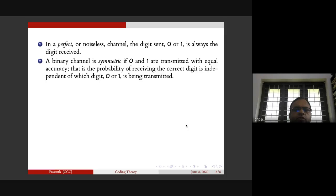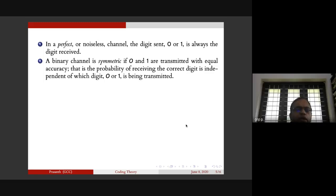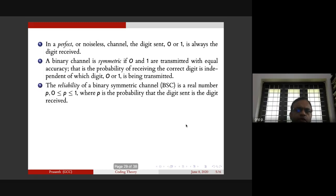A binary channel is symmetric if zeros and ones are transmitted with equal accuracy. This means the probability that a digit is affected is independent of whether it's a zero or one.